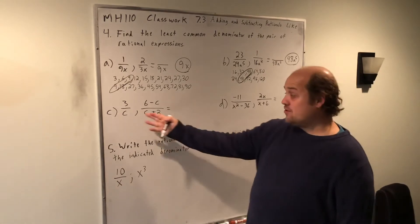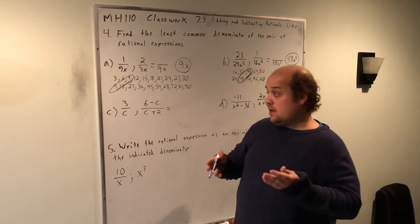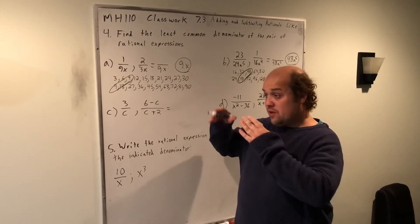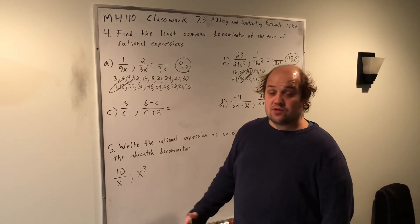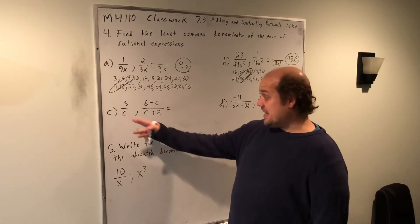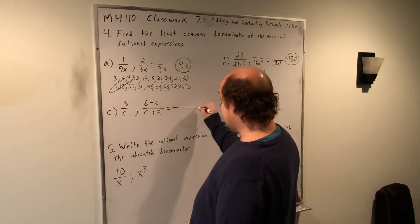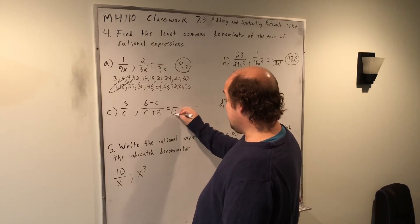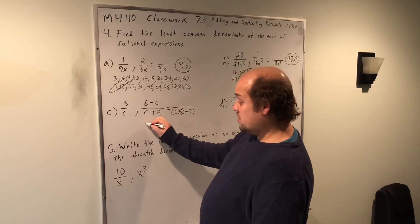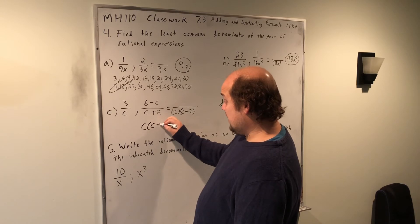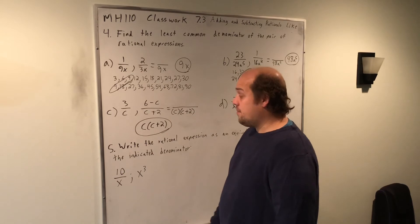When I have factored expressions, it gets a little trickier. If anything can be factored — whether it's a difference of squares or a trinomial — I count each distinct factor once and check for repeated factors. In this case, C and C plus 2 cannot be factored any further, so the common denominator must be these two multiplied by each other: C times C plus 2. So the correct answer for the common denominator here is C parentheses C plus 2.